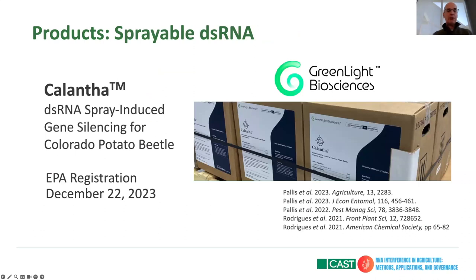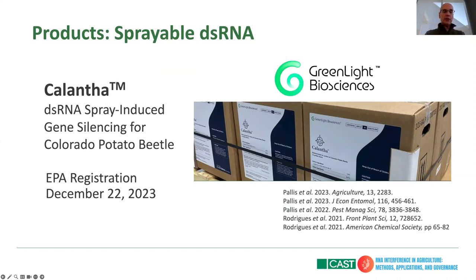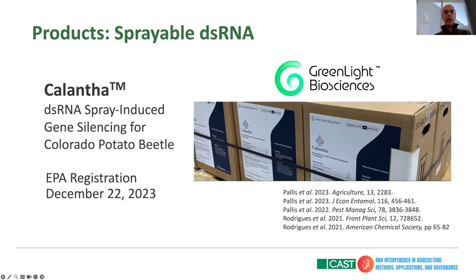Something I'm really proud to talk about is that the first sprayable biopesticide — double-stranded RNA biopesticide — was registered at the end of last year, December 22nd, by the EPA. We now have national US registration and state registrations are following. We are in a position to be able to market Calantha for treatment of Colorado potato beetle. So some of the slides we saw earlier about crop protection has now become a reality at full-scale production through this double-stranded RNA product.